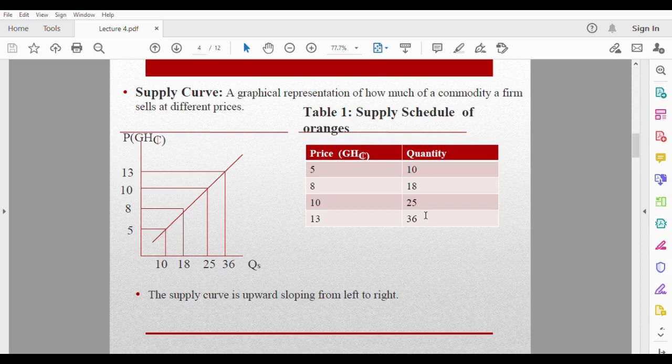Maybe you guessed right. When price increases, you see quantities supplied also increasing. And vice versa - when the price decreases from 13 to 10, you see the quantity supplied also decreasing from 36 to 25.